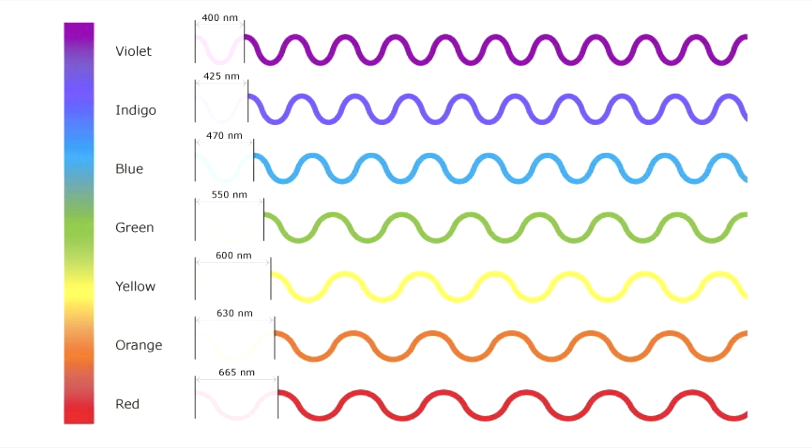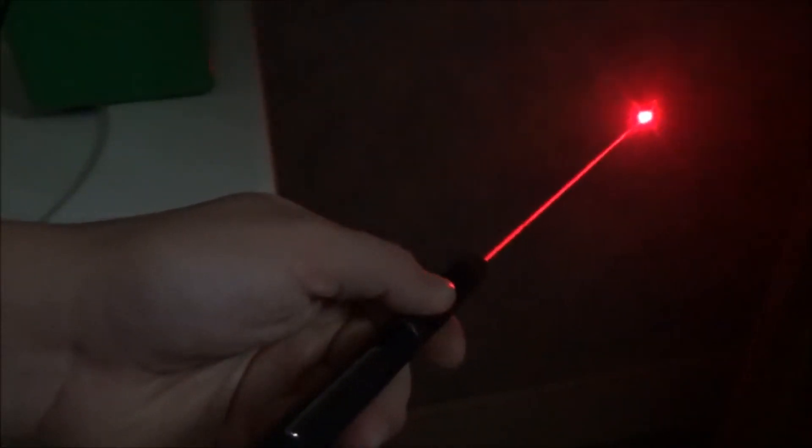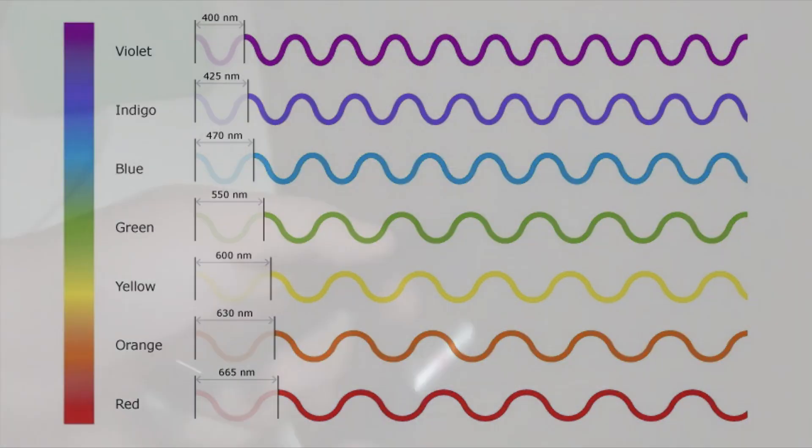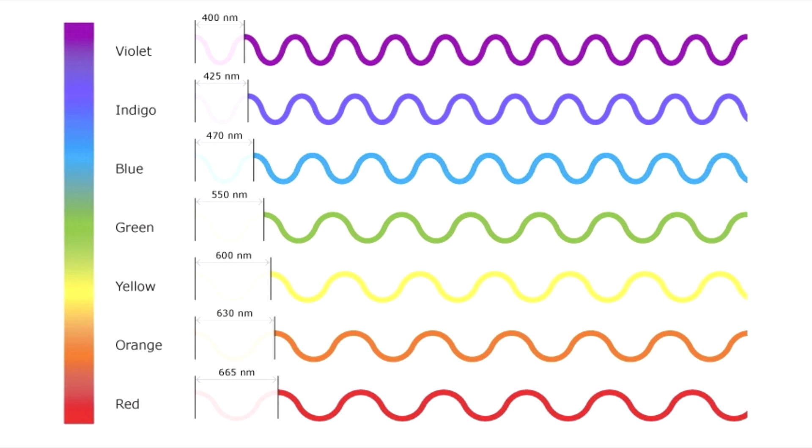And then as we get into the 600 range we see 635 nanometer lasers that are an orangish red, and then we commonly see 650 nanometer lasers. These are the traditional red lasers that you see very often. So all of those numbers that I just rattled off for you, those are the laser colors, the laser wavelengths that you most commonly see in the hobby.